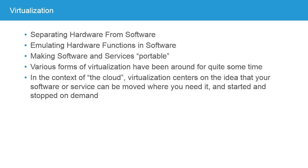Various forms of virtualization have been around for quite some time. For example, originally an application would talk specifically and directly to a printer. Nowadays, the application talks to an API in Windows, Windows talks to the print driver, and the print driver then talks to the printer. In other words, the application doesn't particularly care what type of printer is at the other end — it's more generic and more portable. This level of virtualization has been around for many years, and it's going further and more pervasive, with more places where we can decouple things and make services portable.